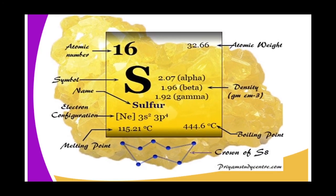As you can see, that is sulfur — a non-metal which is yellow, with an atomic number of 16. That is a sulfur compound, and that is the end of our lesson.